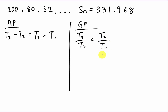Let's do some experiment here. The first term — I'll call it T1, or we know the first term is called A. This will be the second term, and this will be the third term, just in case you don't understand what is the meaning of T3.